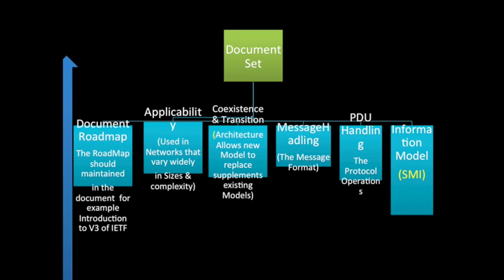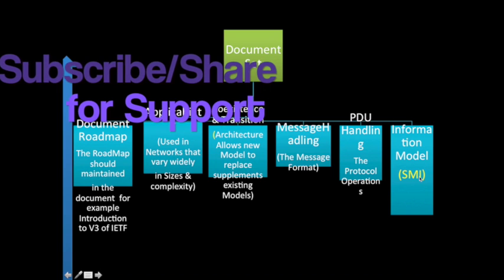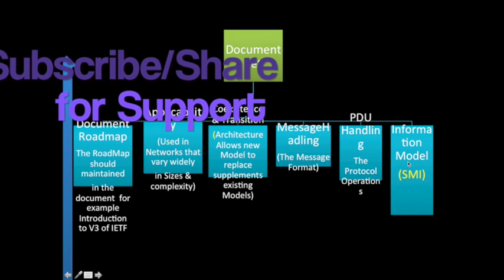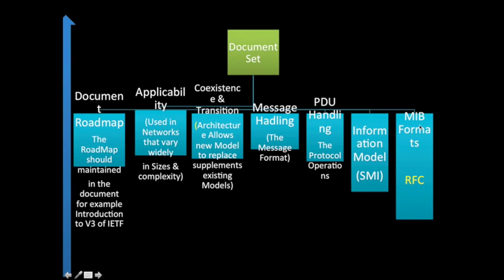The information model defines the Structure of Management Information, or SMI. SMI is responsible for establishing the notation for defining object modules and other elements of managed information. There are various RFCs defined in the document set. In total, there are 7 pillars of the document set.